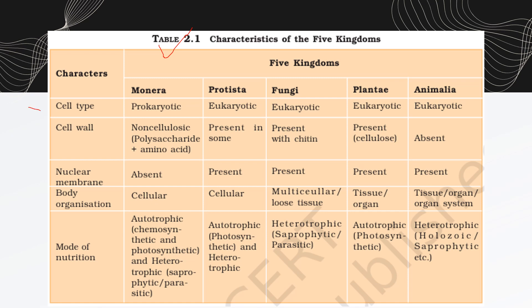The criteria in the NCERT table are: cell type, cell wall, nuclear membrane, body organization, and mode of nutrition. For cell type, prokaryotes are found only in Monera; all other kingdoms are eukaryotic.